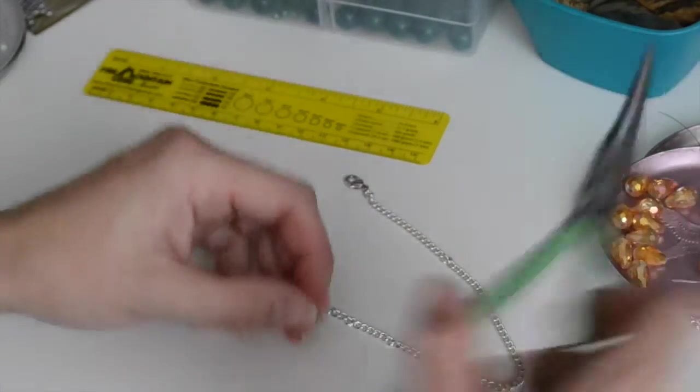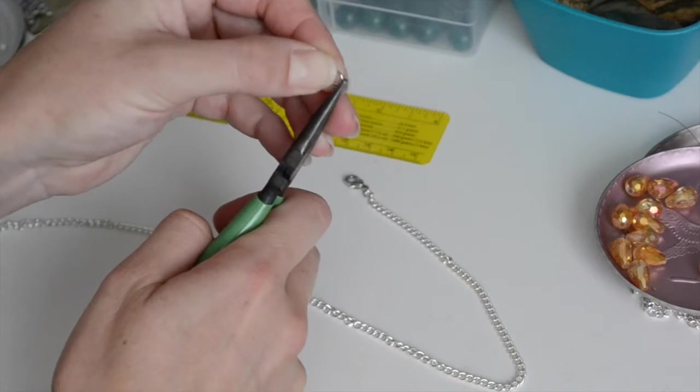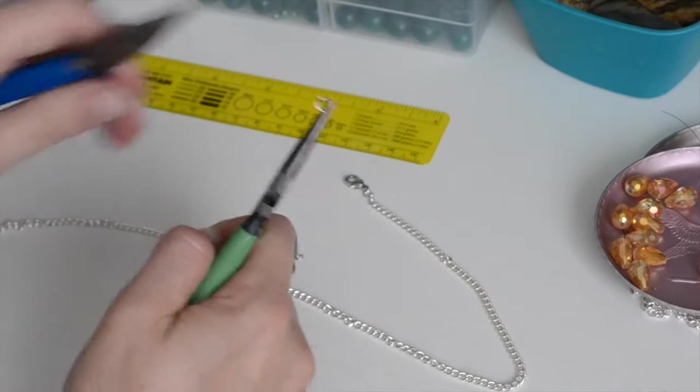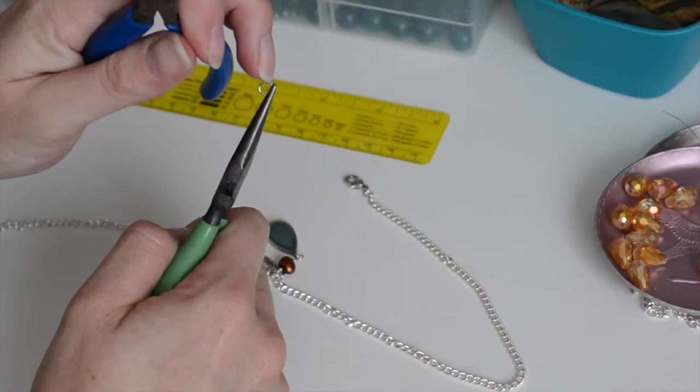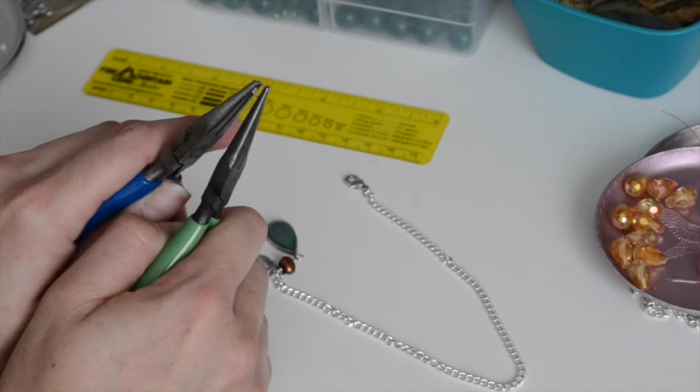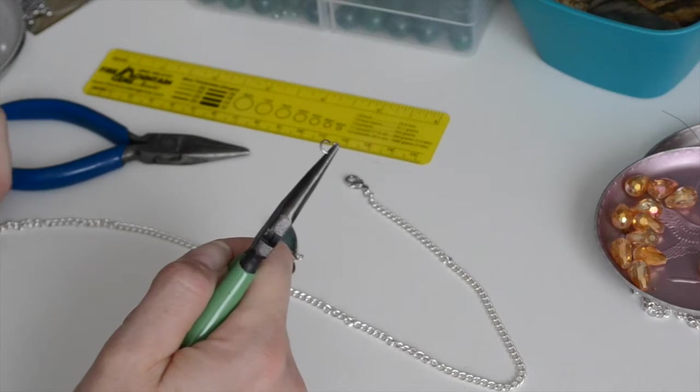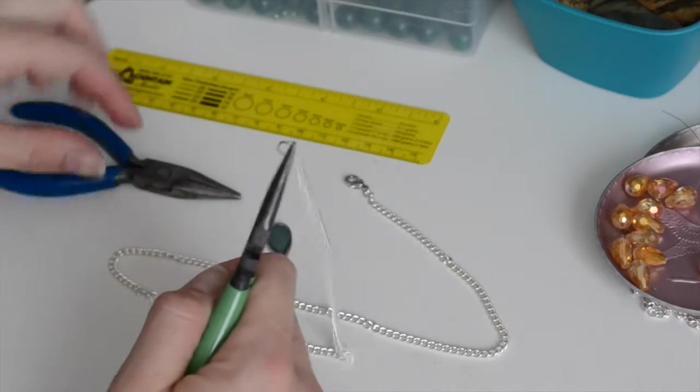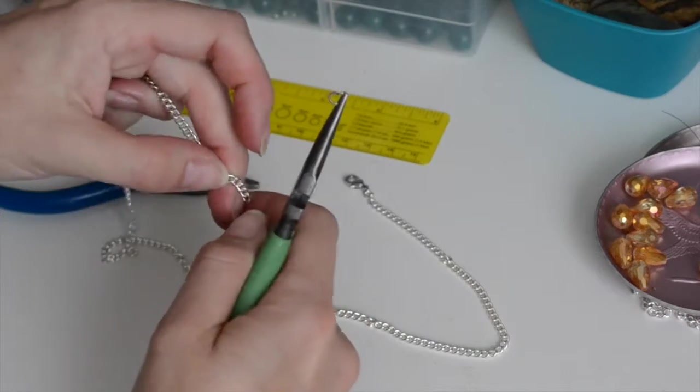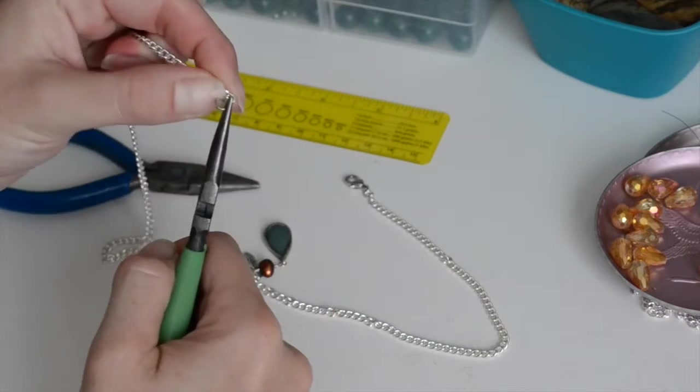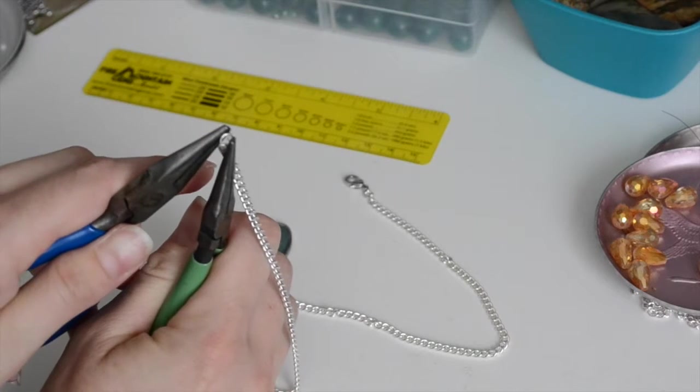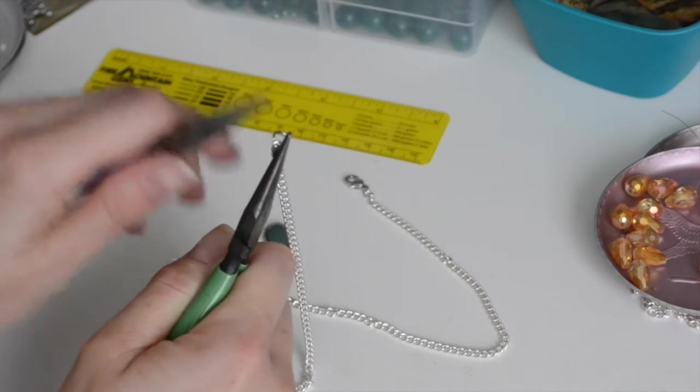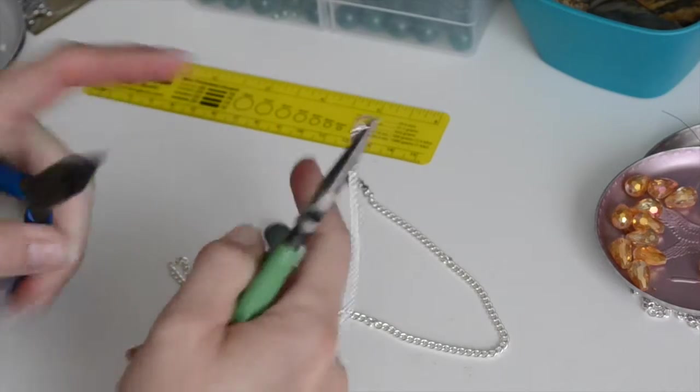Now we're going to take the other 5mm jump ring, get a hold of it with your pliers just to the side of the opening. So it's sitting right there at the top. Sweeping motion, open her up. Pop that on the other side of your chain. For me that's going to be the left. Because I'm a righty, I want the clasp on the right side. And then we'll close it up with that sweeping motion. Give it a little pinch. Make sure that those two ends meet back together.